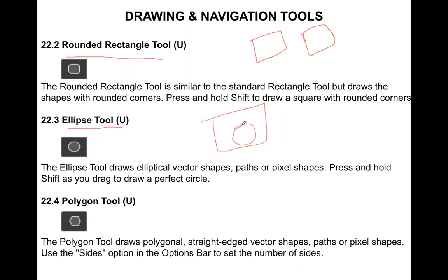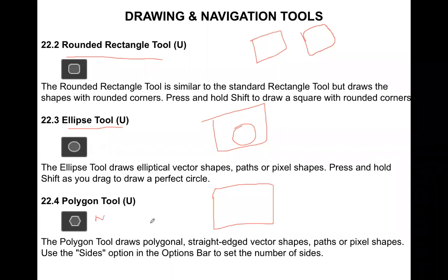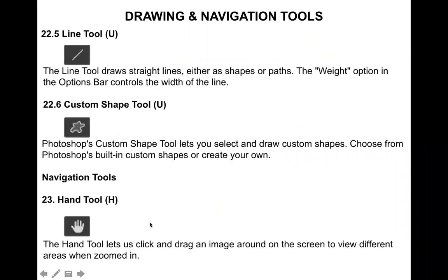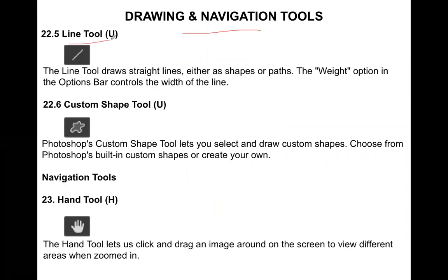The fourth is the Polygon Tool. The Polygon Tool is used to draw polygon shapes in Photoshop. You have a lot of options in the Polygon Tool — you can define the number of edges and the distance of the edges. The next is the Line Tool. If you want to draw vector-based lines in Photoshop, you will use the Line Tool. It draws straight lines either as a shape or a path, and the weight option in the options bar controls the width of the line.